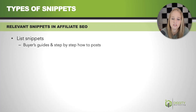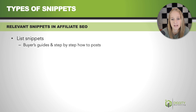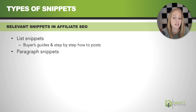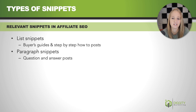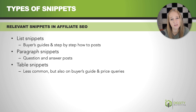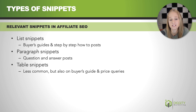List snippets are going to be the snippets you see in buyer's guides and step-by-step how-to posts — super common, especially with affiliate SEO. Paragraph snippets are actually the most common across the entire internet, not just relevant to affiliate, and you see these with question-and-answer type posts. And the last is table snippets — a little bit less common, but I see them with buyer's guides and specifically price queries, like people looking for pricing on different types of products.